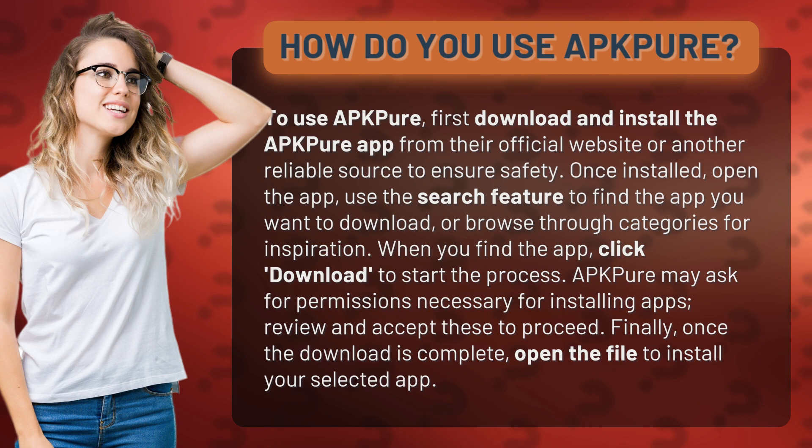When you find the app, click Download to start the process. APK Pure may ask for permissions necessary for installing apps. Review and accept these to proceed.